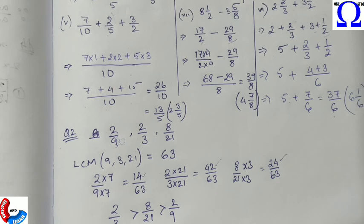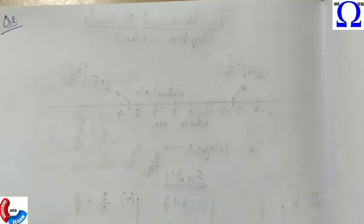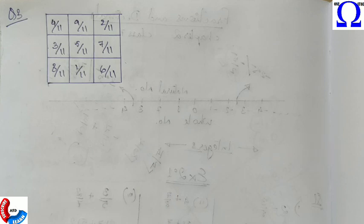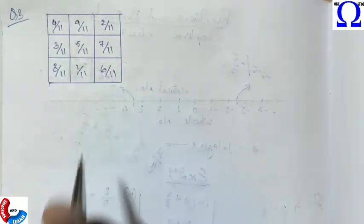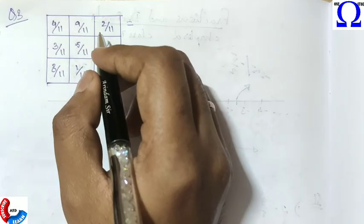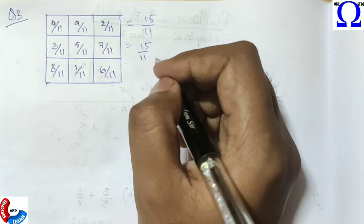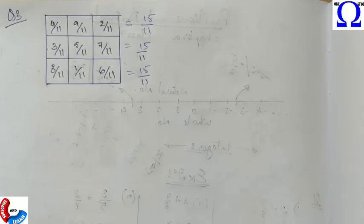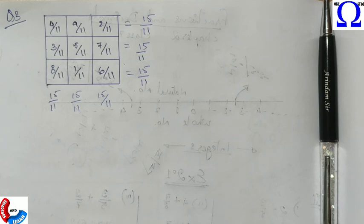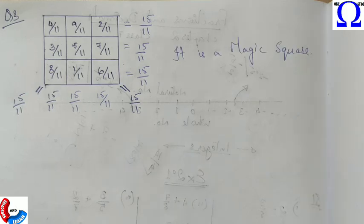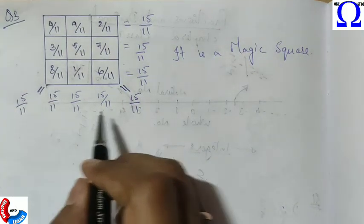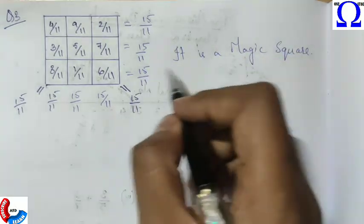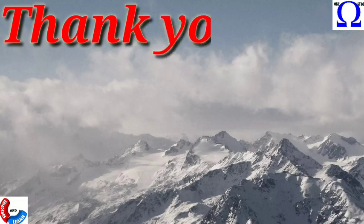Question 3 asks whether the given box is a magic square. As learned in Class 6, we add all rows, columns, and diagonals — if all sums are equal, it is a magic square. Adding the first row gives 15 by 11, the second row also gives 15 by 11, and each row, column, and diagonal gives the same result. Therefore it is a magic square. Remember to show the full process of addition in your answer. From question 4, it continues in the next video.